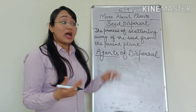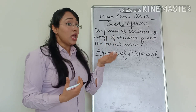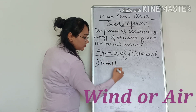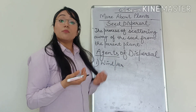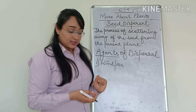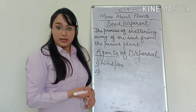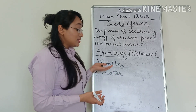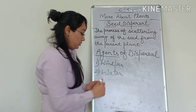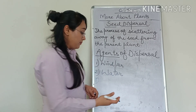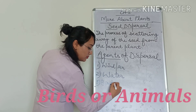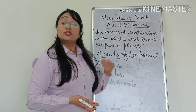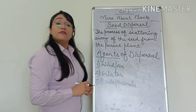There are a few agents that help the seed move or scatter from one place to another. These agents are: first, wind or air — air plays a major role in dispersing seeds to far-off places. Second, water — there are many plants in which seeds are dispersed by water. Third, birds or animals — there are many animals and birds that take seeds to far-off places. These are the agents of dispersal.